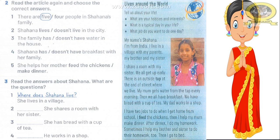What does she have for breakfast? Number four: he works in a shop. He works in a shop. So the question will be — what does her father do? What does her father do?